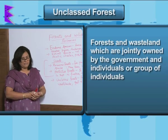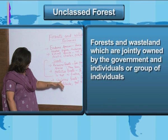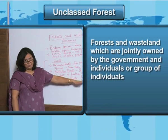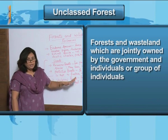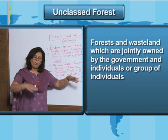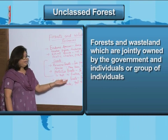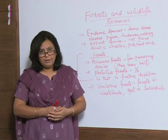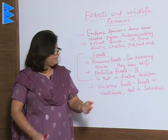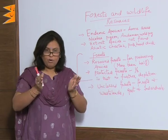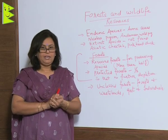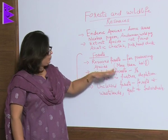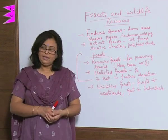The third category is unclassed forest. As the name suggests, it does not belong to any single party. These are forests and wastelands jointly owned by the government and individuals or groups of individuals. People can enter these forests to collect firewood and other necessities. However, this is now a very small portion of India's forests. The government has kept the first two categories — reserved and protected forests — under its direct control.